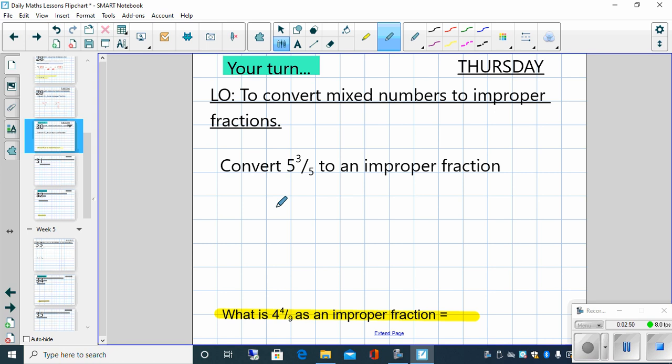Right children. Well done for having a go. Let's have a look to see what the answer is. 5 and 3 fifths. So it's 5 lots of 5 fifths plus 3 fifths as well.